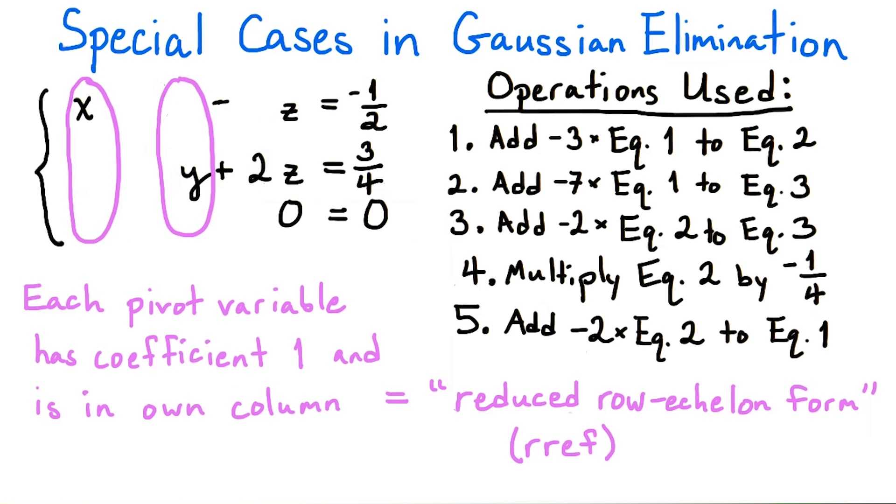Since the leading coefficient of each equation is now 1, and the leading variables only appear in one equation each, we have simplified the system as much as possible. This form is called reduced row echelon form, or RREF for short.